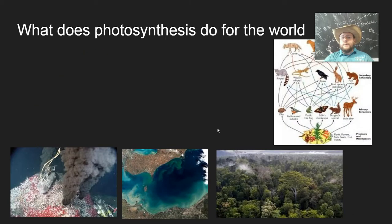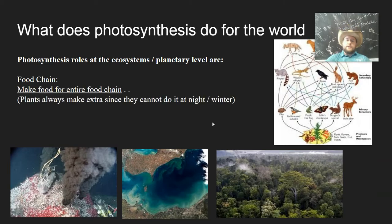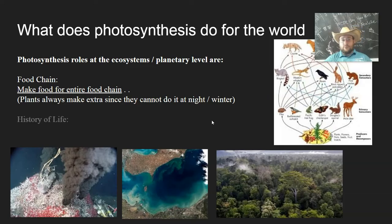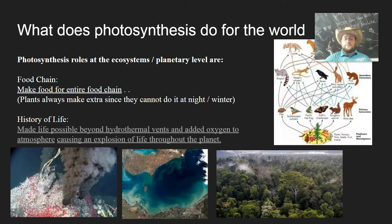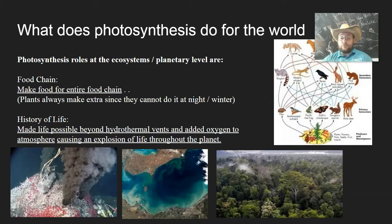Photosynthesis is crucial for the planet because it provides all the food for the food chains, thanks to the fact that plants produce extra food for times when they cannot do photosynthesis. This has also helped the history of life because it made life possible away from volcanic vents where life was trapped using the energy of volcanoes. Once organisms evolved the ability to use sunlight, life could reach every surface of the planet.